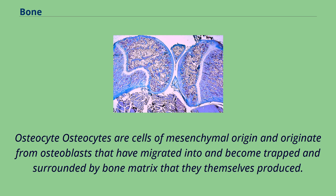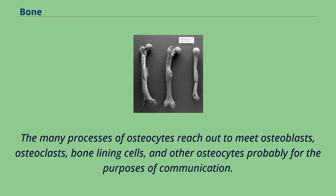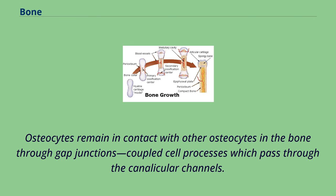Osteocytes are cells of mesenchymal origin and originate from osteoblasts that have migrated into and become trapped and surrounded by bone matrix that they themselves produced. The spaces the cell body of osteocytes occupy within the mineralized collagen type I matrix are known as lacunae, while the osteocyte cell processes occupy channels called canaliculi. The many processes of osteocytes reach out to meet osteoblasts, osteoclasts, bone lining cells, and other osteocytes, probably for the purposes of communication. Osteocytes remain in contact with other osteocytes through gap junctions coupled cell processes which pass through the canalicular channels.